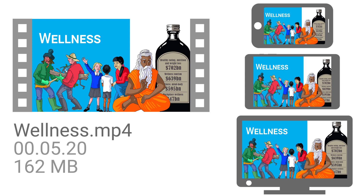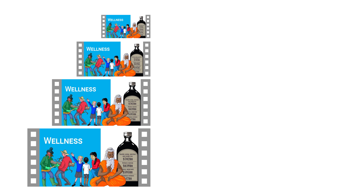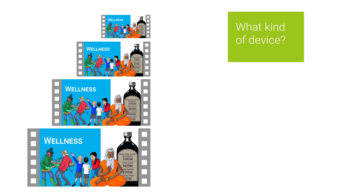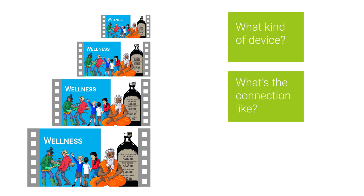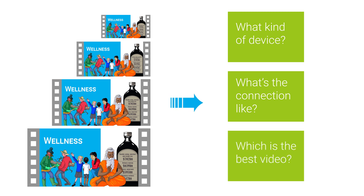Let's look at how adaptive streaming works. Essentially, a number of different versions of the video are made in different sizes. When the video server is asked to deliver a video, it determines the answer to a number of questions: What kind of device will the video be shown on and how big is the screen? What type of connection is it and how good is that connection? Given the answers to these questions, which would be the best version of the video to send?